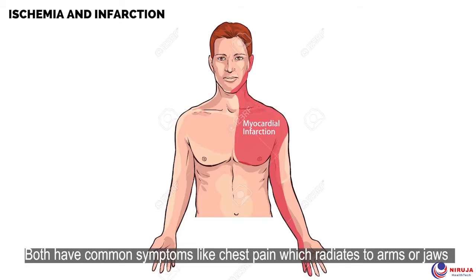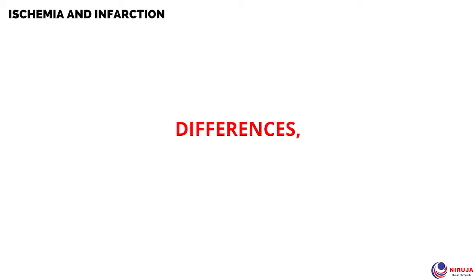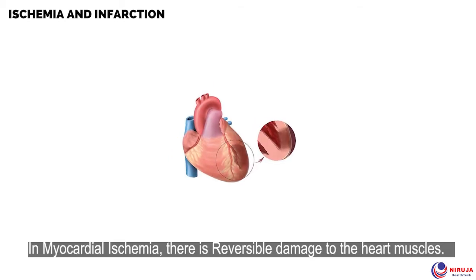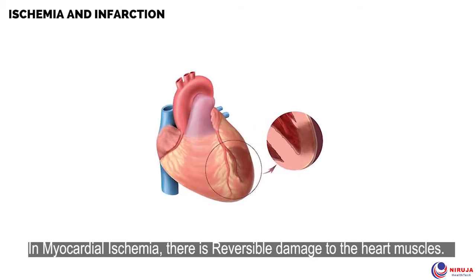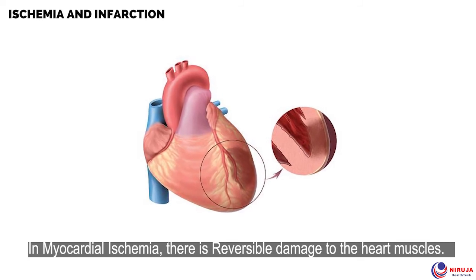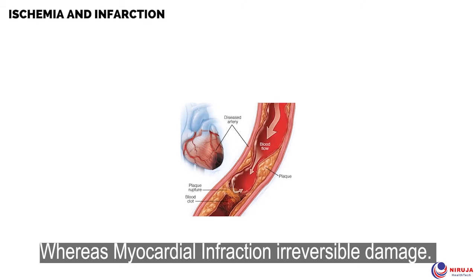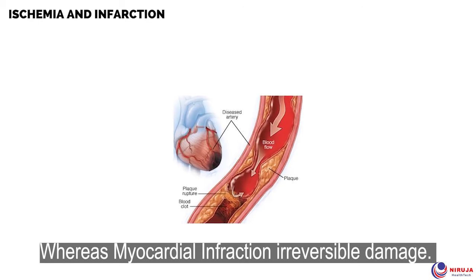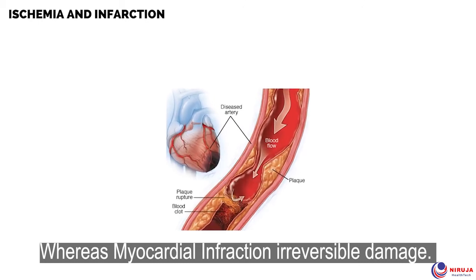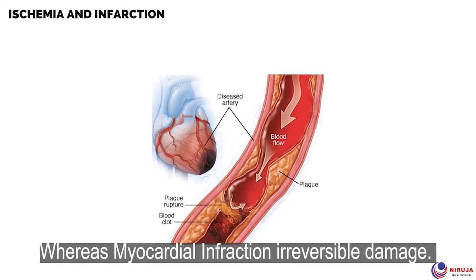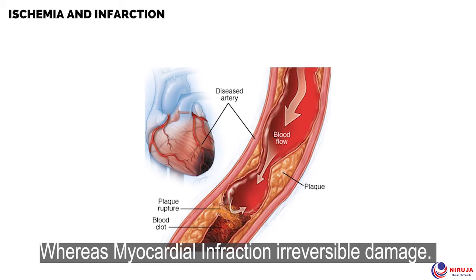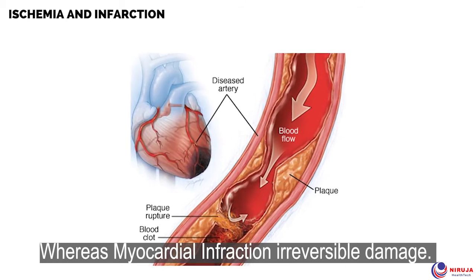Both have common symptoms like chest pain which radiates to the arms or jaw. Differences: in myocardial ischemia there is reversible damage to the heart muscles, meaning heart muscles can be repaired. Whereas myocardial infarction involves blockage or rupture of the blood vessel — it is irreversible damage, though with advanced technology the blockage can be treated.